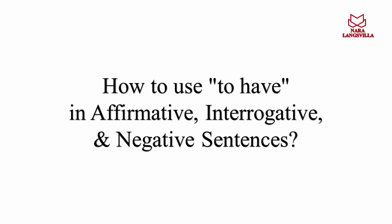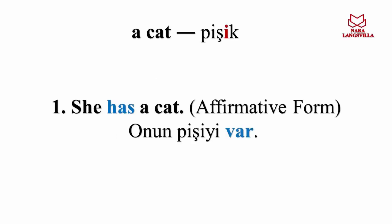How to use 'to have' in affirmative, interrogative, and negative sentences? Eket pişik — she has a cat. It is the affirmative form. Onun pişiyi var — she has a cat.